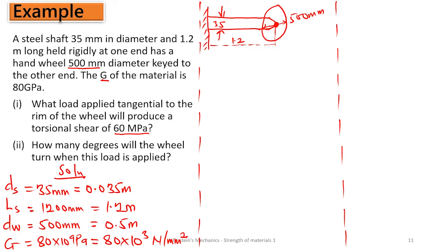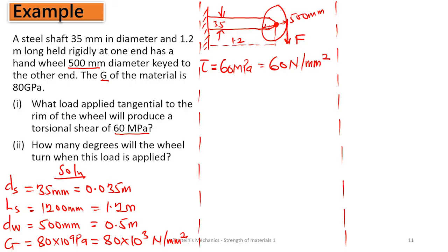For Part I, it asks: what load applied tangential to the rim of the wheel will produce a torsional shear of 60 megapascal? So the shear stress given is 60 MPa, which is 60 N/mm². We want to find the force or load that, when applied to the rim of this wheel, causes a torsional shear of 60 megapascal. Once you turn the wheel, because it is keyed to the shaft, the shaft will also be turning.